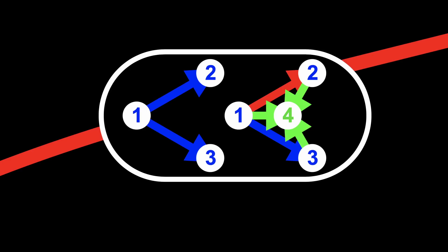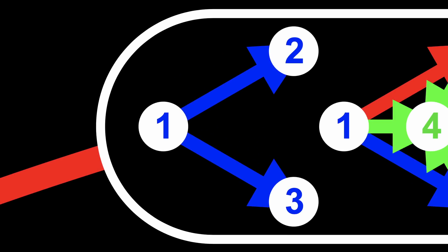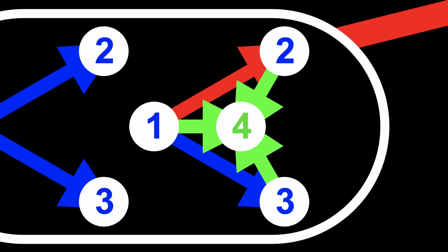The mini hypergraph on the left shows which edges are matched by the rule — the edge from node 1 to node 2, and the edge from node 1 to node 3. The mini hypergraph on the right shows which edges are created and deleted by the rule: the edge from node 1 to node 3, shown in blue, remains as is; the edge from node 1 to node 2, shown in red, is deleted; and the edges from nodes 1, 2, and 3 to the new node 4, shown in green, are created.